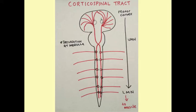The corticospinal tract is our main motor tract. We start at the motor cortex — remember our homunculus — and that projects upper motor neurons, which are neurons that travel down the spinal cord. They decussate at the lower medulla and continue down to the level at which they send off projections to the muscles, where they synapse with lower motor neurons that then travel to the muscle.